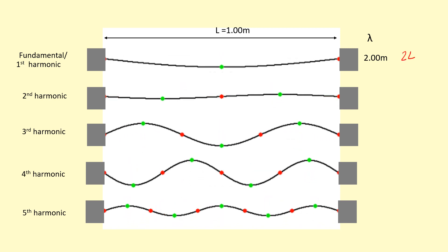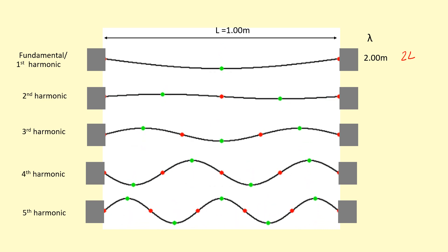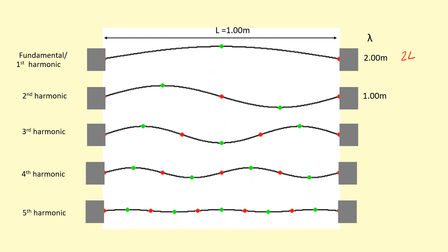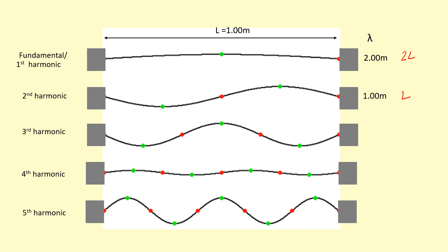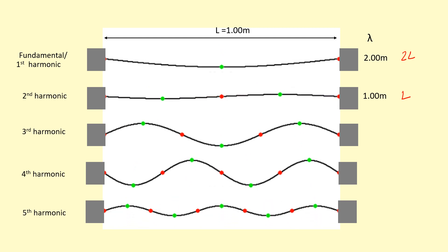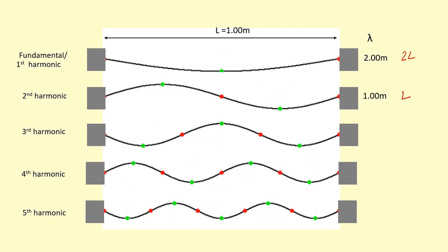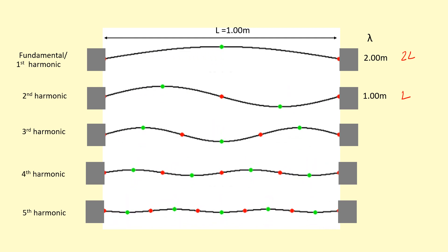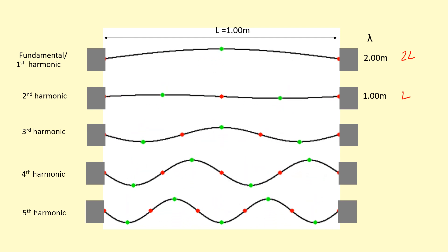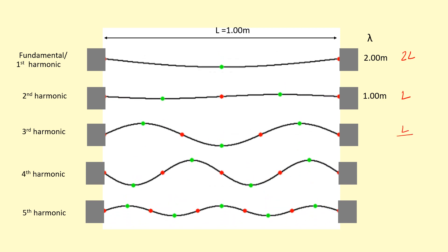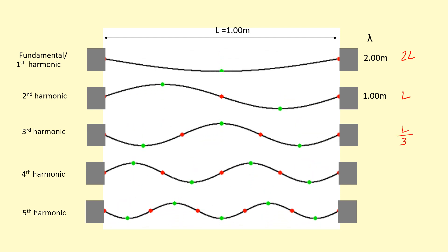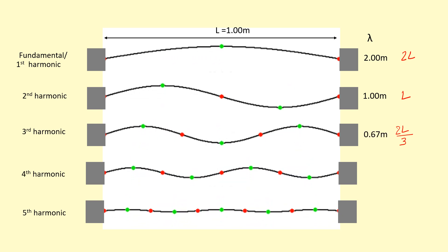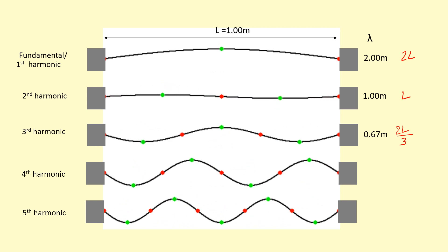For the second harmonic, you can literally see two loops, and that shows a whole wave. So the wavelength is just one meter — it's just L. For the third harmonic, you should be able to see three loops. However, a wavelength is only two loops. So you take the length L, divide it by three because there are three loops, and multiply by two to give you the wavelength — that's 0.67 meters, so one divided by three times two.